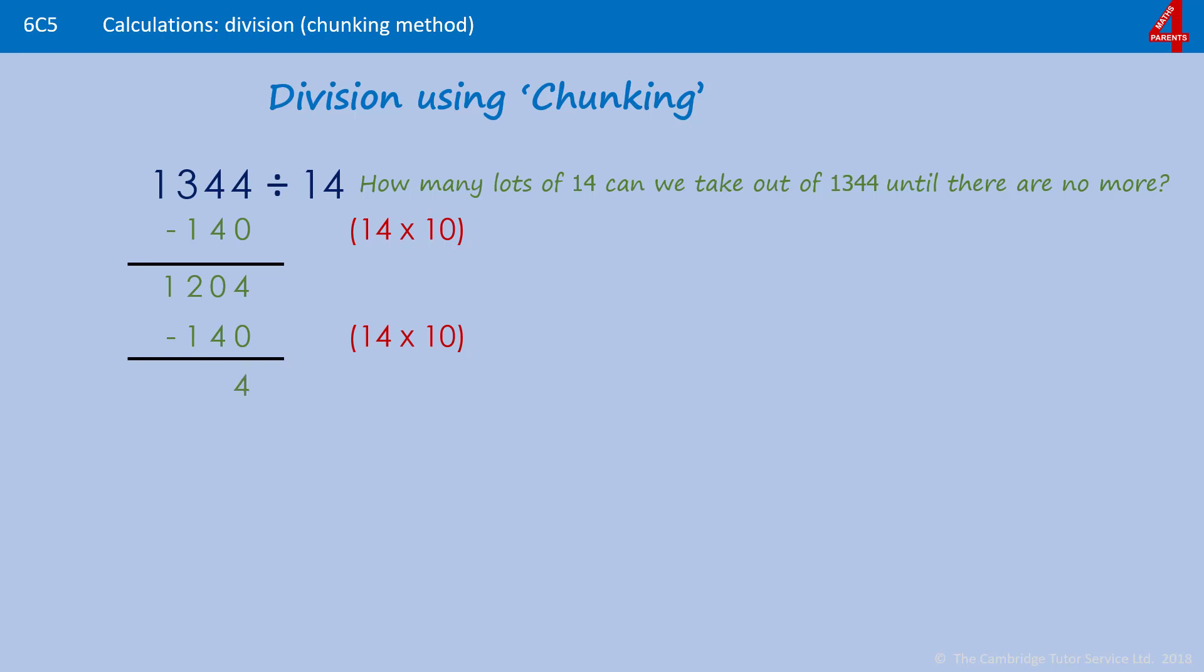4 take nothing is 4, nothing take 4 we can't do so we take from the next column, 10 take 4 is 6, and now we're left with 11 take 1 which is 10. We've still got a big number. We could use our knowledge of 14 times 10 and say well let's double that and make it 14 times 20.